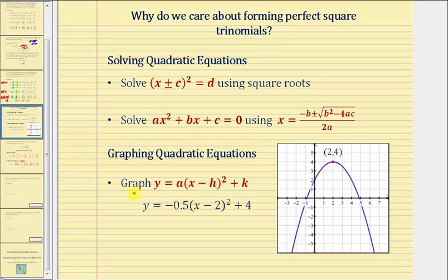Perfect square trinomials are also helpful when graphing quadratic equations on the coordinate plane. If we have a quadratic equation with a perfect square trinomial, we can easily identify key components of the graph. For example, by inspecting the equation, we can find the vertex at (2, 4), and because a is negative, the parabola opens down.